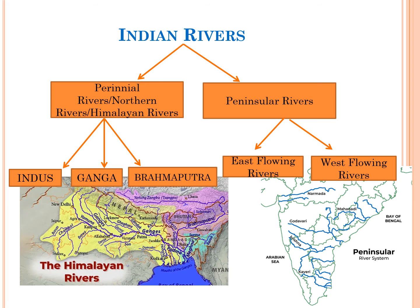The Indian rivers are classified into perennial rivers and the peninsular rivers. Perennial rivers are also known as northern rivers or the Himalayan rivers. The Himalayan rivers were divided into three major systems: the Indus, the Ganga and the Brahmaputra rivers. The peninsular rivers are divided among west flowing rivers and the east flowing rivers.